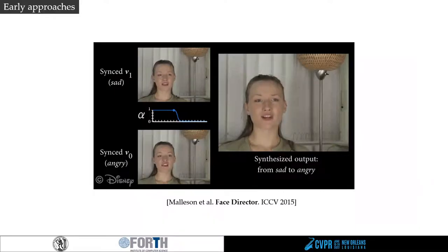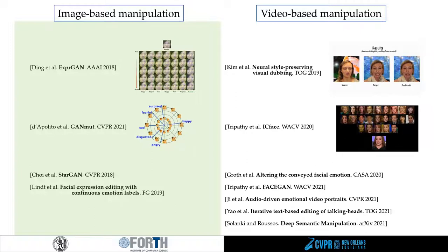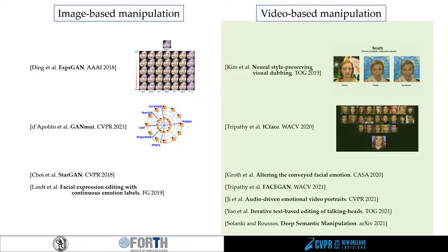Early approaches aimed at achieving accurate synchronization between multiple pre-recorded facial performances with different emotional states. Recently, generative adversarial networks have been used for translating face images to different emotions without the need for parallel data. Until very recently, most of these works were designed for static images. In the last couple of years, there have been some works designed for videos, but these are not directly related to the explicit control of facial emotions.